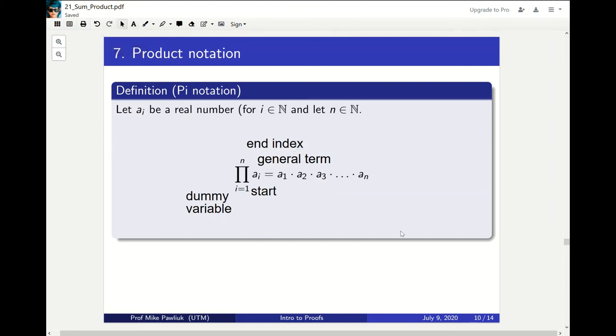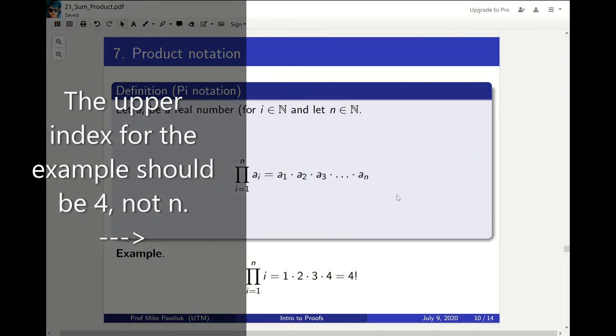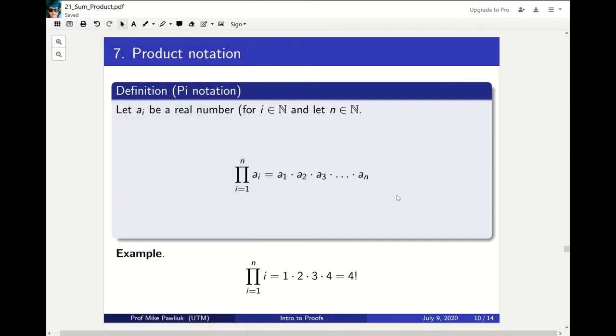This time instead of taking a sum, we're taking a product. One good example of this is the product from i equals 1 to n of i. So this is 1 times 2 times 3 times 4. You've seen this before, this is 4 factorial.